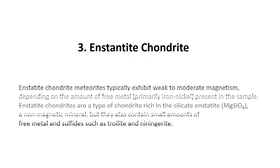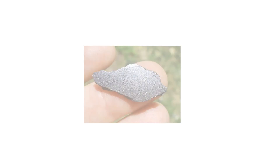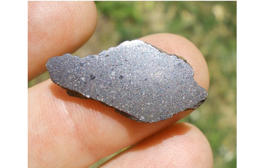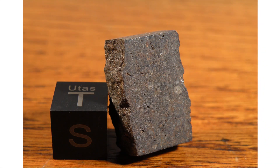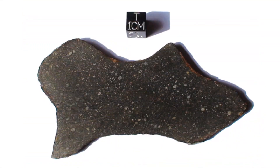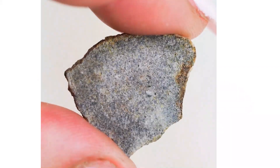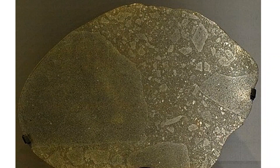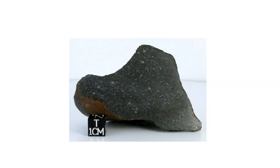Magnetism of Enstatite chondrite meteorites: Enstatite chondrites typically exhibit weak to moderate magnetism, depending on the amount of free metal, primarily iron-nickel, present in the sample. Enstatite chondrites are a type of chondrite rich in the silicate enstatite (MgSiO3), a non-magnetic mineral, but they also contain small amounts of free metal and sulfides, such as troilite and niningerite.